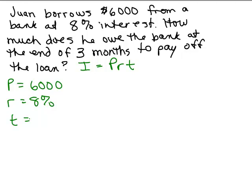And here's the trick. We've got 3 months, but you have to do it in years. So you have to change 3 months to years. What part of a year is that? And that would be 3 twelfths of a year.